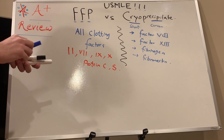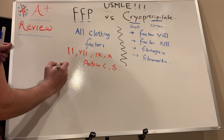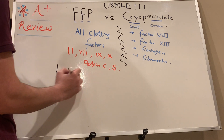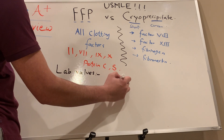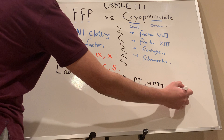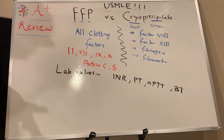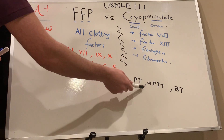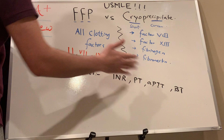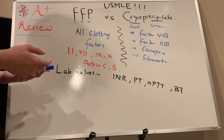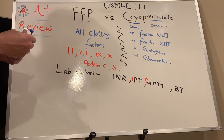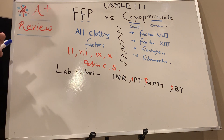Fresh frozen plasma and cryoprecipitate affect lab values when a patient presents with multiple clotting factor deficiencies. The lab values to focus on are INR, PT, aPTT, and bleeding time. Fresh frozen plasma normalizes INR, PT, aPTT, and bleeding time. Note that once you start FFP, you cannot reverse these levels. Abnormal levels indicate intrinsic or extrinsic pathway issues.